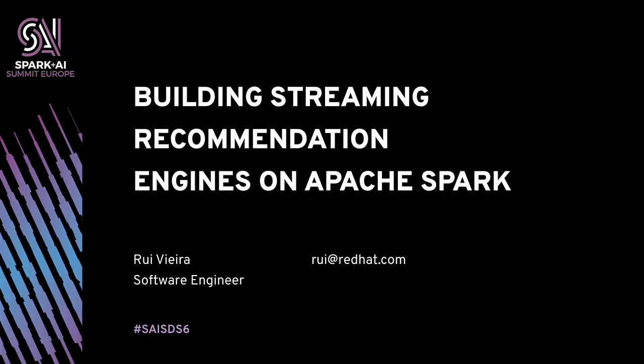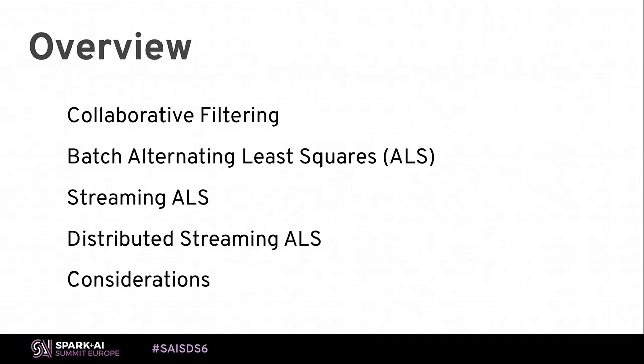Hi everyone. I'm Roy, and it's really nice to see so many people here. I'm a software engineer working at Red Hat, and today I'd like to talk, as the title says, on building streaming recommendation engines on Apache Spark. The general layout is: I'll first introduce the concept of collaborative filtering, focusing on two variants — the batch and the streaming — then look at the principles of distributed streaming recommendation on Spark, and finally talk about some practical issues and why streaming is not always a silver bullet.